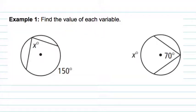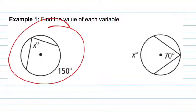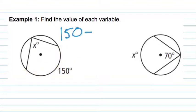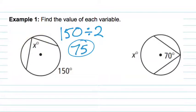Find the value of each variable. In example one, the 150 is referring to the arc highlighted right there. Since the inscribed angle is going to be half the measure of the arc it corresponds to, the value of x is determined by dividing 150 by 2, giving you 75 degrees. That is the value of that inscribed angle.